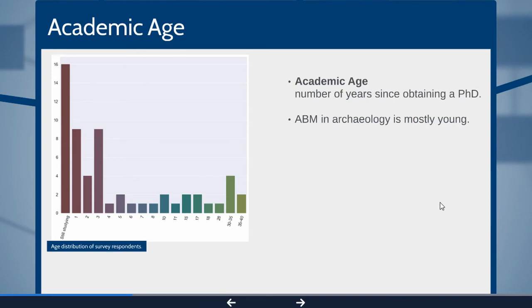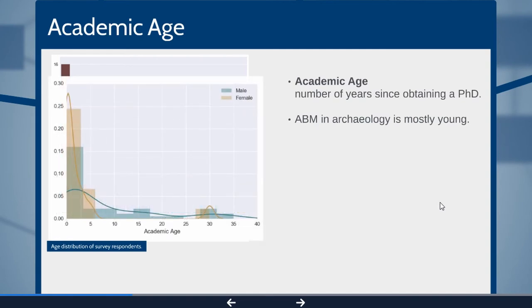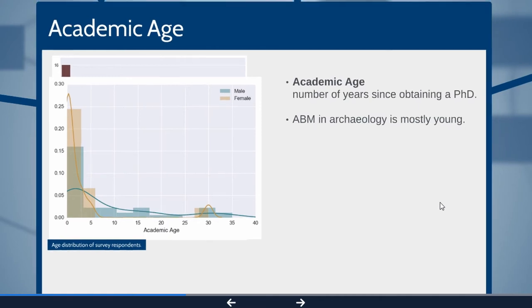When you break it into gender, you can see that most of those young academics are actually female. This is a frequency, so this basically tells you that most females that we asked are in the young academic age category, whereas guys are way more equally distributed.